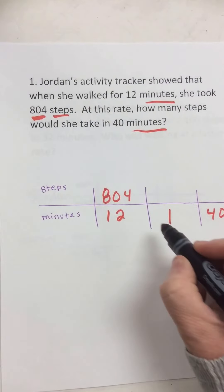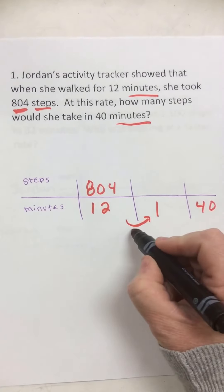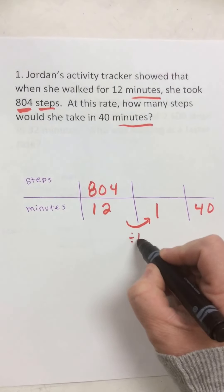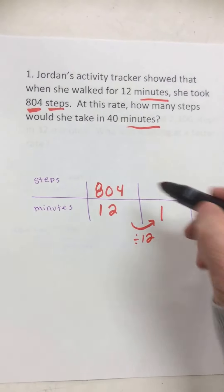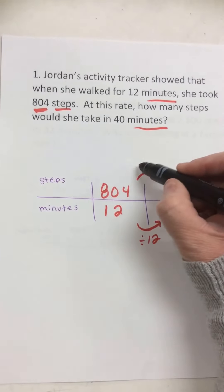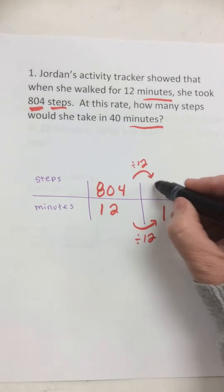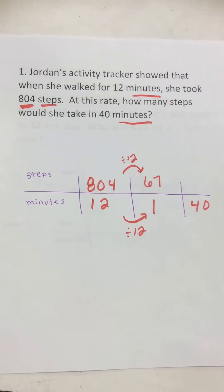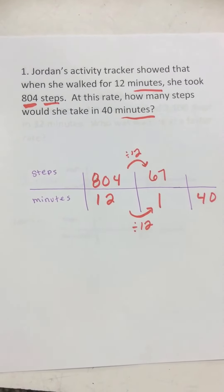I put a 1 here. So how do I get from 12 to 1? That's always by multiplying or dividing, so I divide by 12. 12 divided by 12 is 1. But whatever I do to the bottom, I have to do to the top. So 804 divided by 12 is 67. That means she could take 67 steps in one minute.